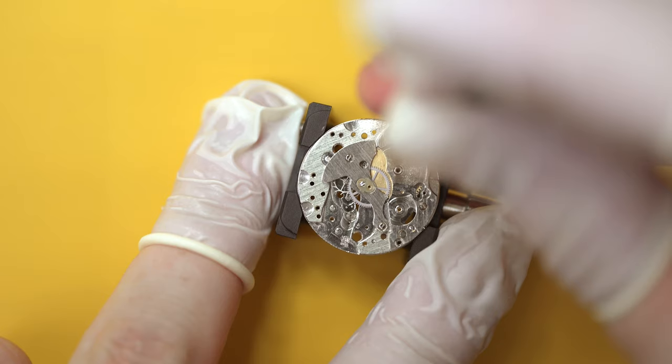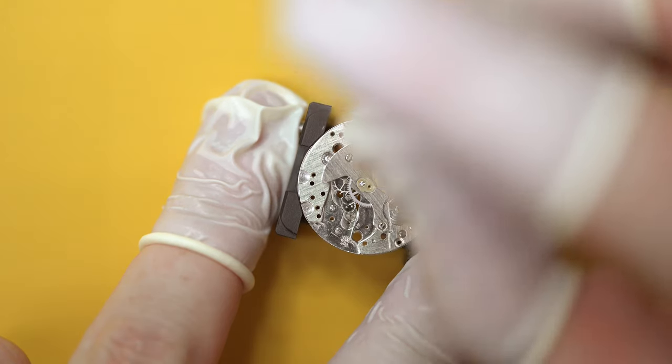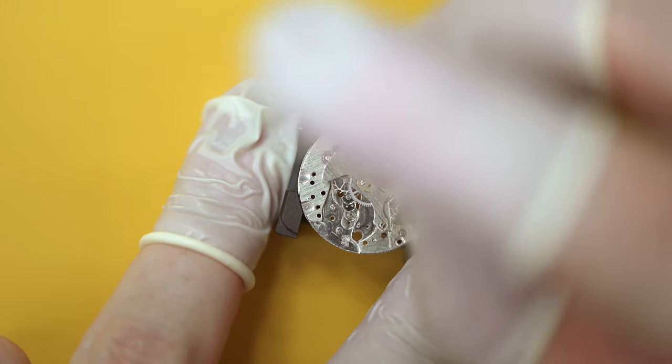Now we have the final two screws for the barrel bridge. We can tighten that down and then continue with the reassembly.